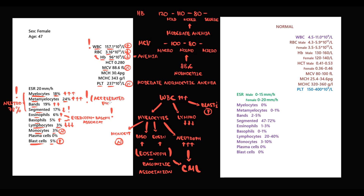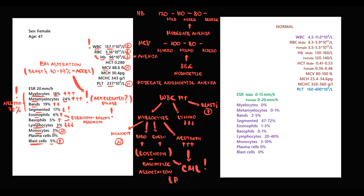However, we cannot make that conclusion from blood analysis alone. To determine whether it is accelerated phase, chronic phase, or blast crisis, we must perform bone marrow aspiration. The presence of blasts within 10 to 19 percent in the bone marrow is the criterion for accelerated phase. To confirm the diagnosis of chronic myeloid leukemia, we must identify the Philadelphia chromosome — the 22nd chromosome formed by translocation between chromosomes 9 and 22 — or by FISH analysis to detect the BCR-ABL gene, also formed by that translocation.